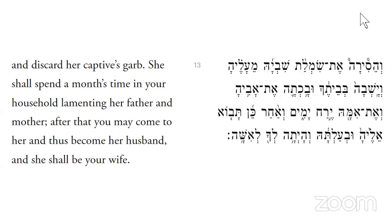Without going into all the details of what's called the case of the Eshet Yefat Toar, part of the procedure before the soldier is allowed to marry her is that there has to be a cooling-off period of 30 days — a month — during which time she laments and cries for her father and her mother. Only after that can the soldier marry the captive.